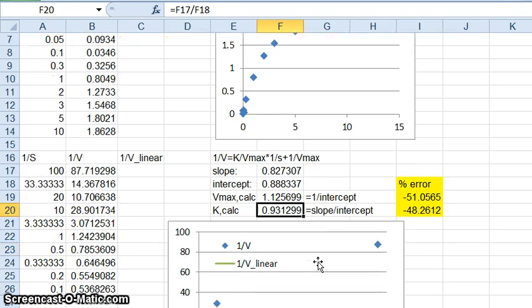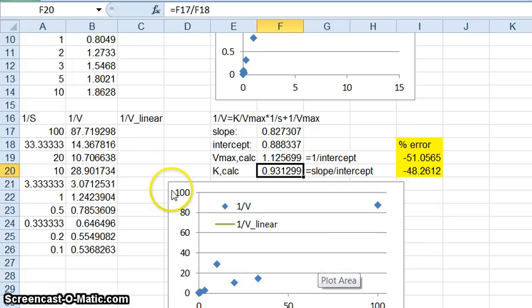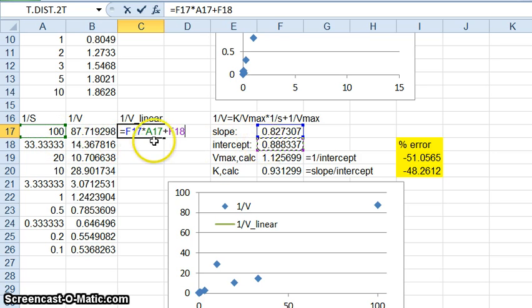What does this look like in terms of the linear? Well let's go ahead and fill out what the linear would be so it's 1 over V is equal to the slope times 1 over S plus the intercept. What I want to do here is I want to make these static references. Then I'm going to fill down and then the line will appear here which I've already prefilled on the graph. The line looks like it fits pretty well.